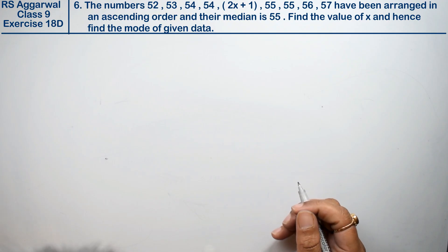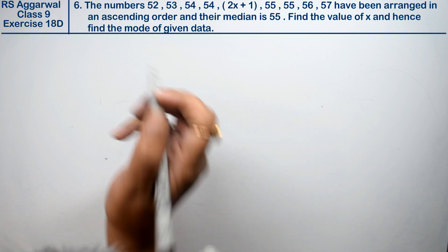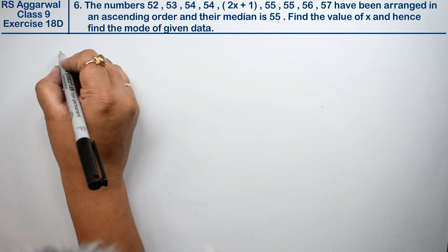Let's do question number 6 of exercise 18D, median and mode of ungrouped data. Question number 6 gives us some numbers. Friends, we will write them and then explain them.